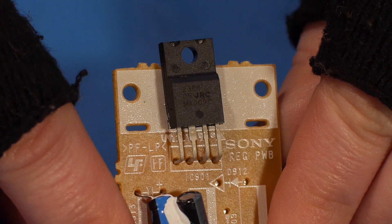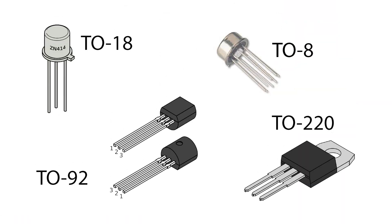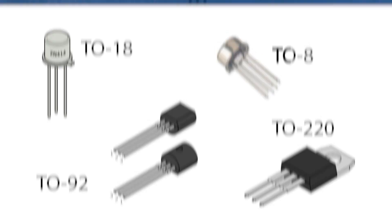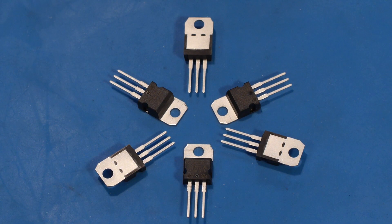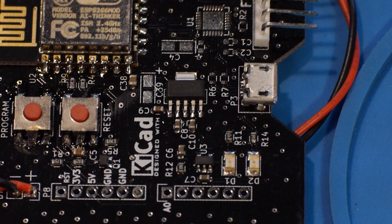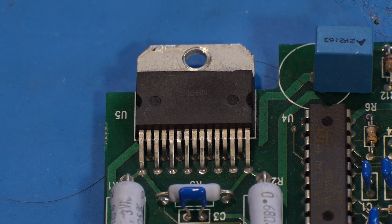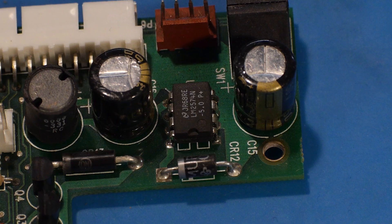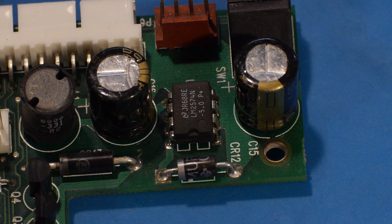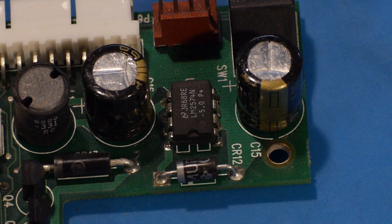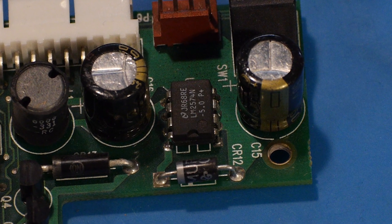Let's take a look at what those external casings look like. Some simple ICs that don't require many pins make use of packages designed for discrete components, like those of transistors — like these voltage regulators that utilize the same packaging as MOSFETs. Others, like these single inline packages, have more pins but along only one side. Through-hole chips with contacts down two opposite sides are dual inline packages, or DIPs.